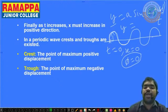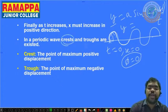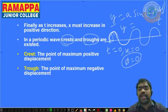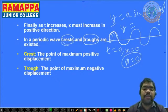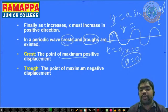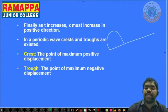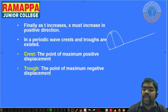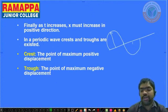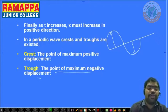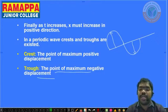Based on the periodic wave, we can define crest and trough. The crest is the point of maximum positive displacement — when the wave travels in the positive direction and reaches the maximum position. The trough is the point of maximum negative displacement — when the wave reaches the maximum point in the negative direction.